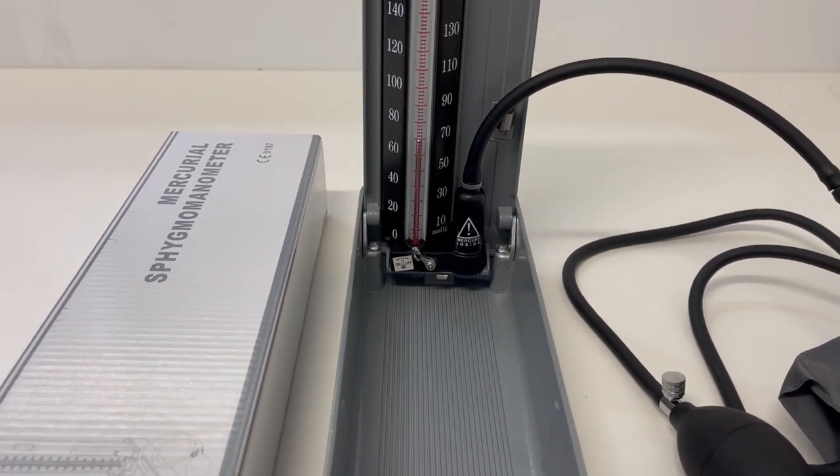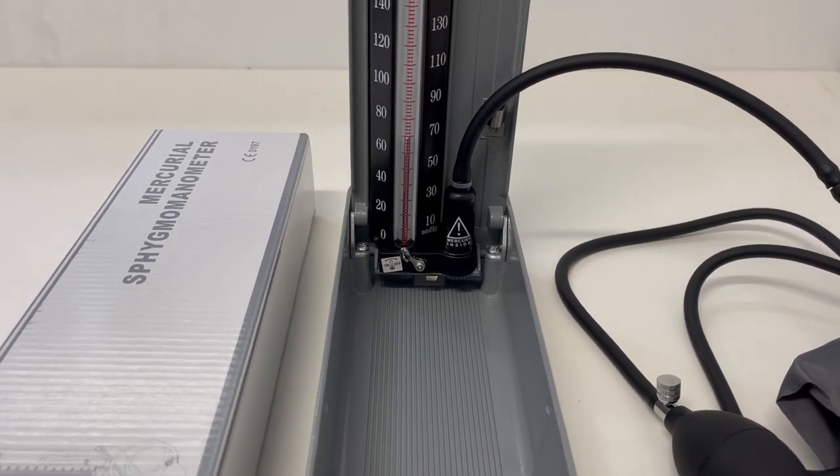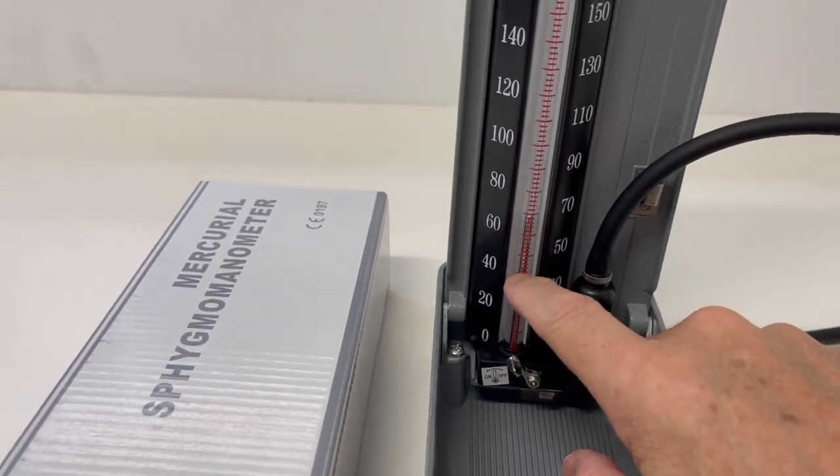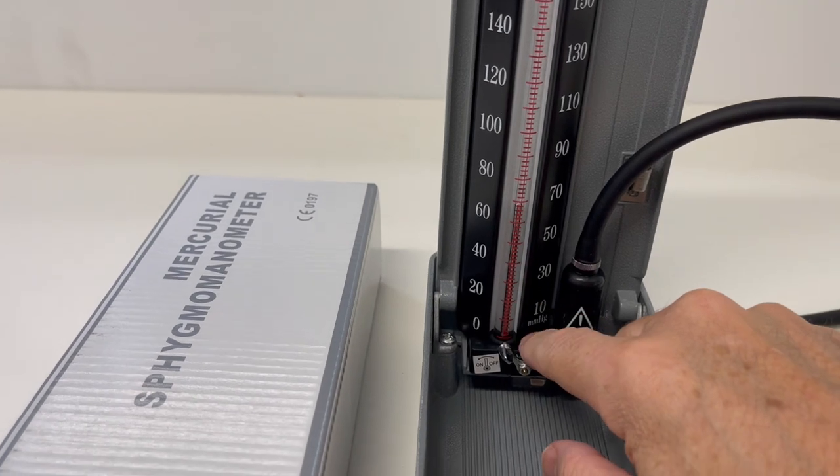If you've recently purchased one of these mercury sphygmomanometers and you find that there is actually a gap in the mercury, there is a way to fix that.